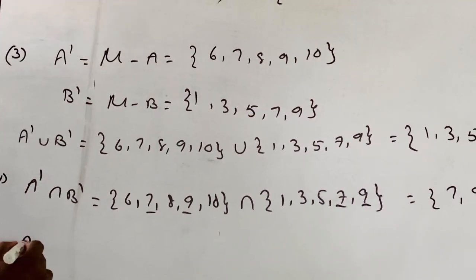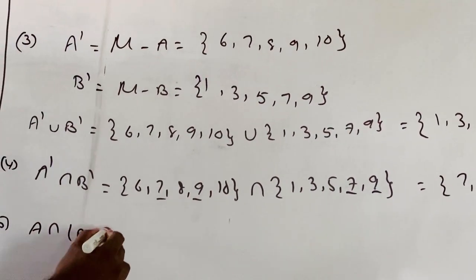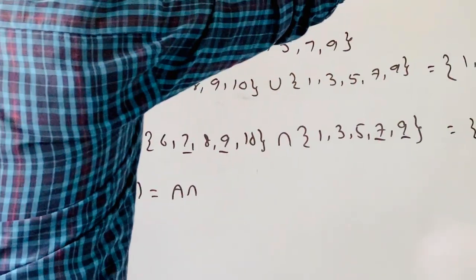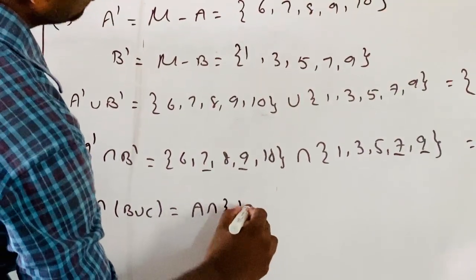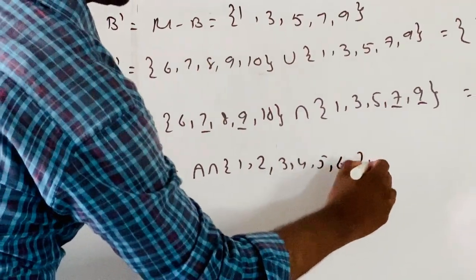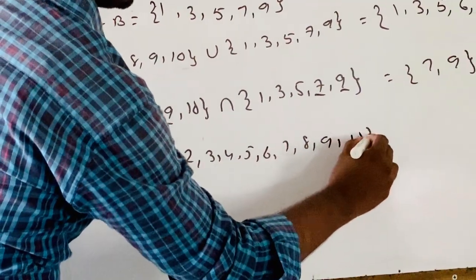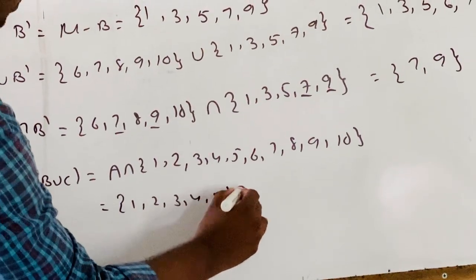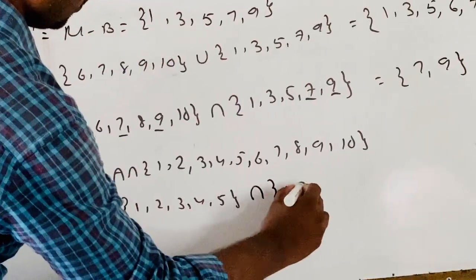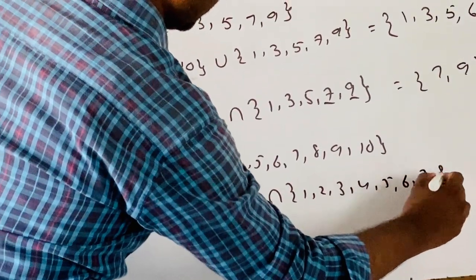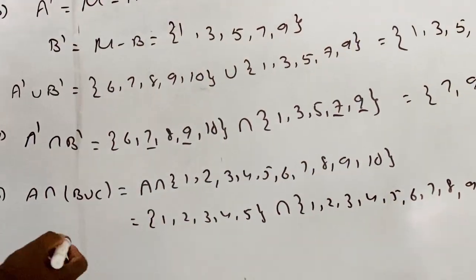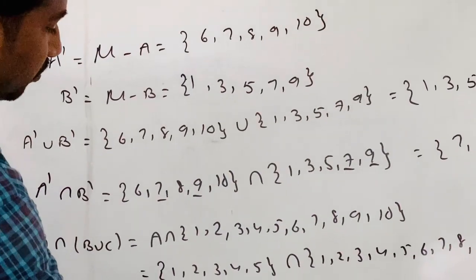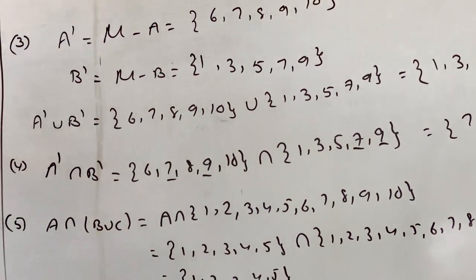Fifth: A intersection (B union C). B union C equals {1, 2, 3, 4, 5, 6, 7, 8, 9, 10}. Then A intersection (B union C): A is {1, 2, 3, 4, 5} intersection {1, 2, 3, 4, 5, 6, 7, 8, 9, 10}. The common elements are {1, 2, 3, 4, 5}. So the answer is {1, 2, 3, 4, 5}.